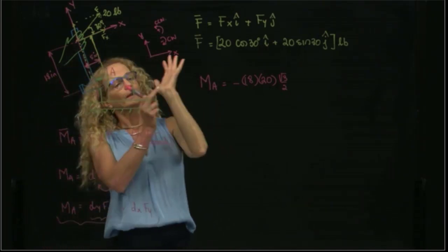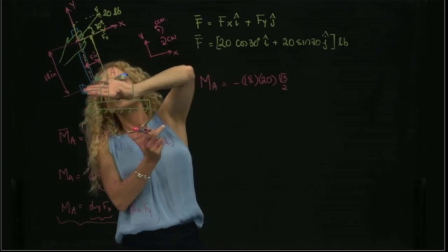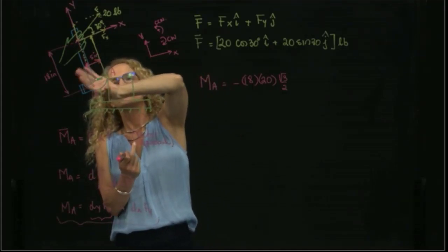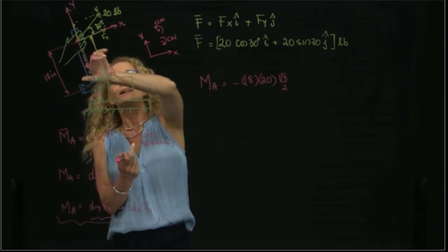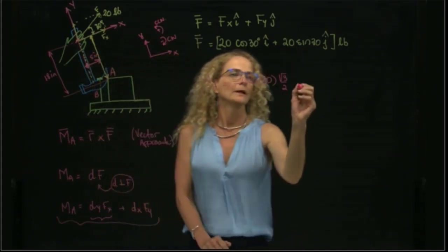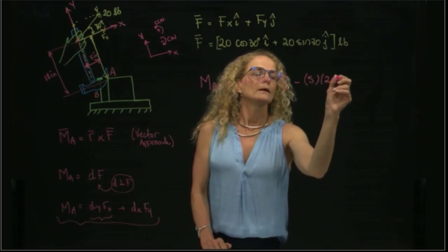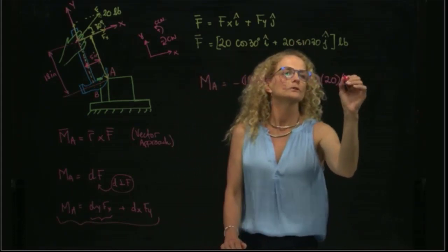And find that the distance is 5 inches. And again, I place my hand here, it's point A, the distance goes to my palm, and I curl my fingers to the force, and it will be also clockwise. So it will be negative 5, 20, sine of 30, which is one half.